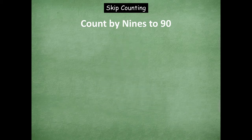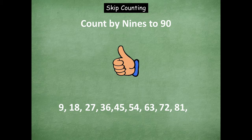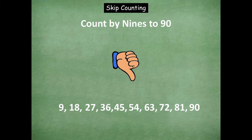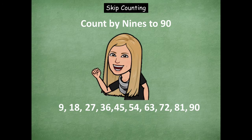Now we're going to skip count by nines to 90. Counting up: nine, 18, 27, 36, 45, 54, 63, 72, 81, and 90 — stop. Now counting down: 90, 81, 72, 63, 54, 45, 36 — stop. Good job, friends! You did a great job skip counting by sixes, sevens, eights, and nines.